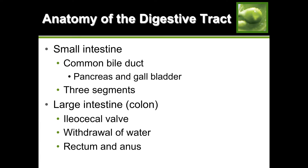Once chyme hits the small intestine, it's very acidic - your stomach acid is a pH of 2. This is where the common bile duct comes into play. The pancreas and the gallbladder both excrete digestive juices into the small intestine through the common bile duct. The pancreas produces bicarbonate, helping to neutralize the acidic chyme. Remember that your small intestine is divided into three segments: the duodenum, the jejunum, and the ileum.